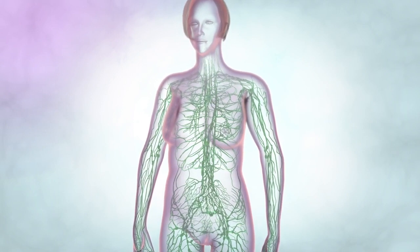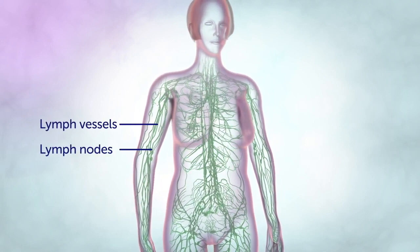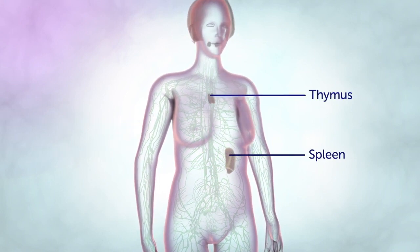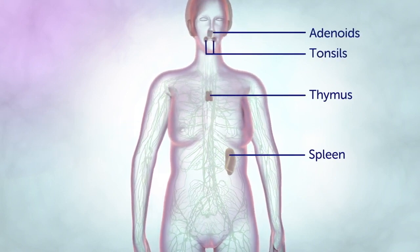It is a system of thin tubes called lymph vessels and lymph nodes, or glands. These run throughout the body. The spleen, thymus, tonsils, and adenoids are also part of the lymphatic system.